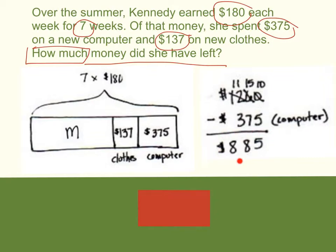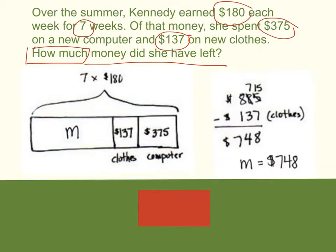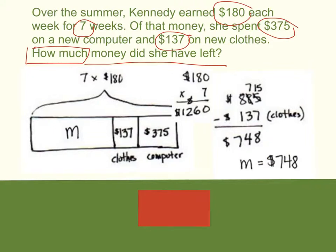This is what she has left after she purchases the computer. Now we take the total amount of money she has left and subtract the clothes from that. $885 minus $137 would give me a difference of $748. So M equals $748. If we add $748 plus $137 plus $375, we get the total amount of money she earned for those weeks, which is $1,260.